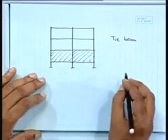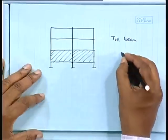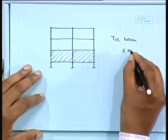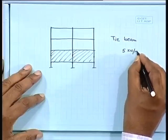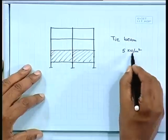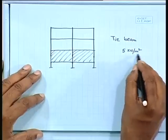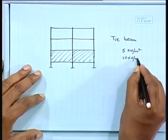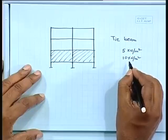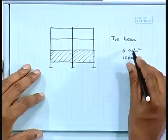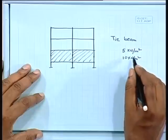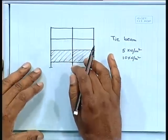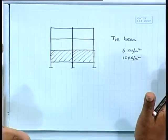The bearing capacity can start with say 5 kilo Newton per square meter, then 10 — like that. Depending on the bearing capacity: if the bearing capacity is less and load is more on the column, then your footing size will be bigger.